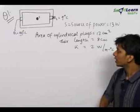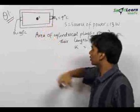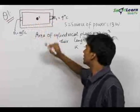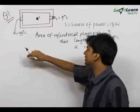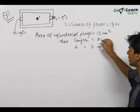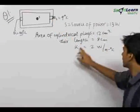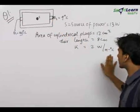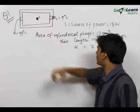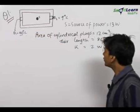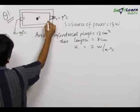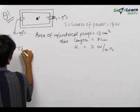In this question we have a chamber with inner walls and outer walls. The only heat exchange occurs through two cylindrical plugs. The outer surface of one cylindrical plug is maintained at 4°C and the other at 100°C. The area of cross section of the cylindrical plugs is given, the length is given, and the thermal conductivity of the material is given. There is also a source inside the chamber of power 13 watts. We need to find the temperature T of the inner walls at equilibrium.